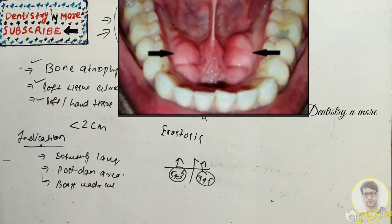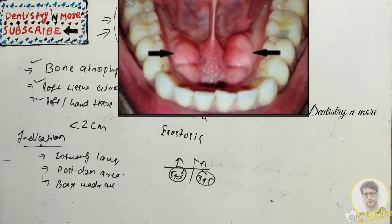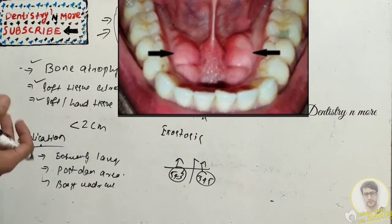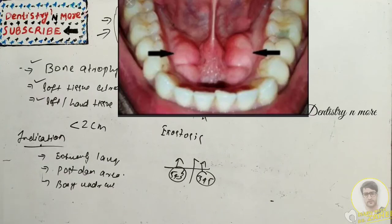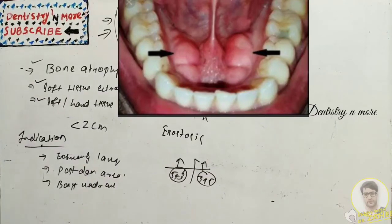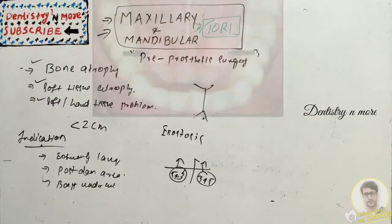The indications for mandibular tori removal are almost the same as for maxillary tori: tori causing lingual undercuts which interfere with lingual flange extension, when the overlying mucosa is ulcerated, or large tori interfering with speech and deglutition.